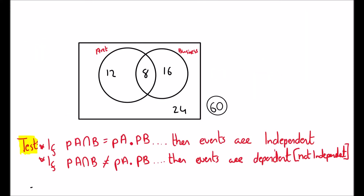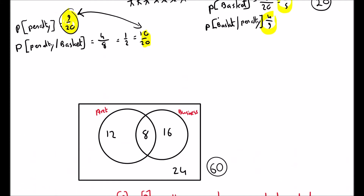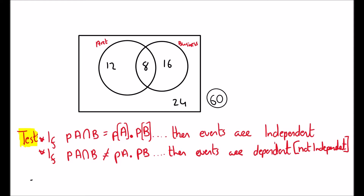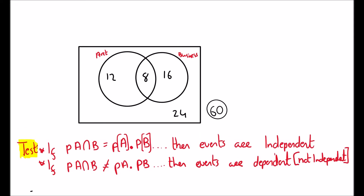Here is the test we use to prove whether events are independent or not, and it's a very easy test. If you don't fully understand all the conceptual explanation above — although I hope you do — this is the type of question you're going to get in the Leaving Cert, so you can really just learn this method because they will only ask you to see if something like art and business are independent events.